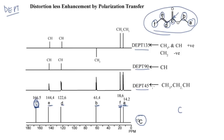Let's start from DEPT 45. DEPT 45 gives positive peaks for CH3, CH2, and CH. Carbon a is CH3, b is CH2, d is CH, e is also CH, and f is CH3. So you get positive peaks for all of them except c, because carbon c does not have hydrogen. DEPT 45 essentially just tells you how many hydrogen-containing carbons there are.